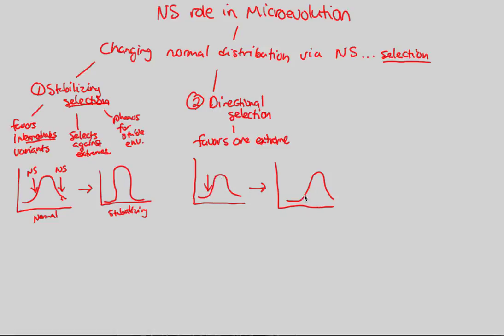If you imagine pushing down on one end of the normal distribution graph, what you expect in the next generation is the graph literally shifted to one side — a very low amount of individuals on the selected-against side, and a large concentration on the favored side. You have selected for one extreme, and those individuals are now the majority. Natural selection pushes against those on one end, resulting in a shifted distribution. This is microevolution on a small scale, and we can observe this in real life.